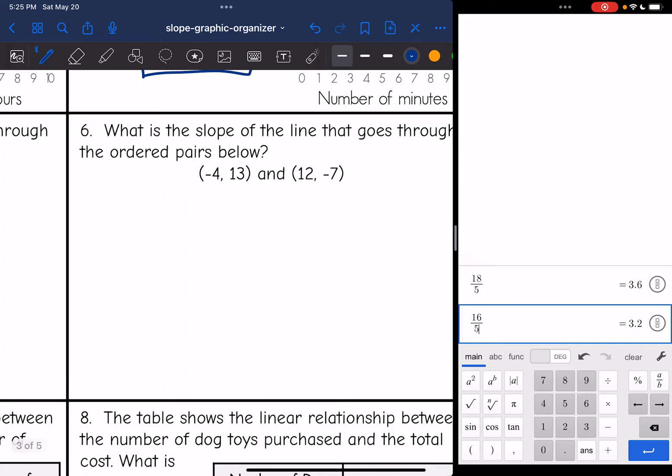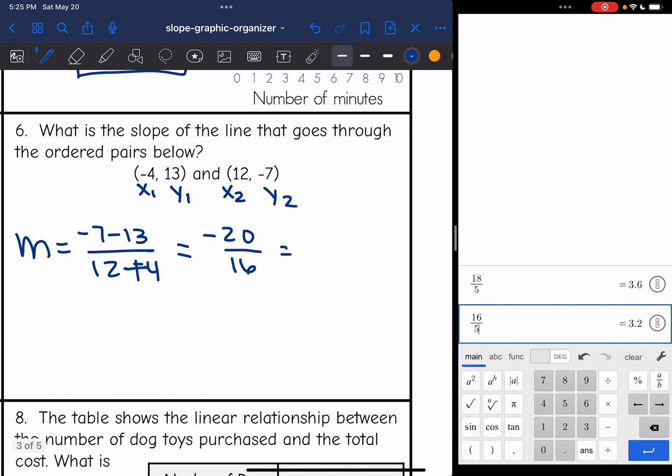Next one, same thing. I'm going to label some points x1, y1, x2, and y2, and now I'm going to use slope formula to find the slope between them. Y2 minus y1 would be negative 7 minus 13, all over x2 minus x1 would be 12 minus negative 4. Negative 7 minus 13 is negative 20. 12 minus negative 4 is the same thing as 12 plus 4, which is 16. Both of those numbers are divisible by 4. Negative 20 divided by 4 is negative 5. 16 divided by 4 is 4. So the slope simplifies to negative 5 fourths.